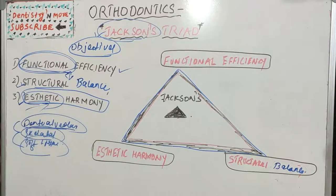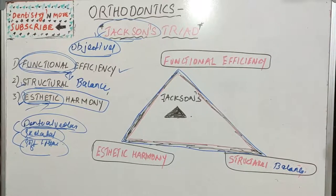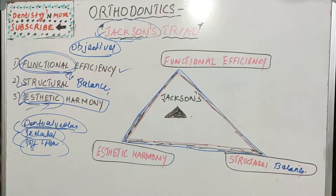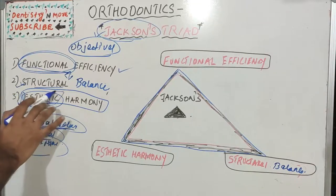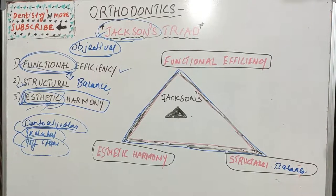The last objective is aesthetic harmony, which is why most people go to an orthodontist — to correct their aesthetics. The aesthetic concern is purely subjective; the person feels their aesthetics are compromised and needs to improve them to a desired level. We have common standards, but aesthetics is always a subjective concept. The problem could be tooth-related, bone-related, or soft tissue-related.